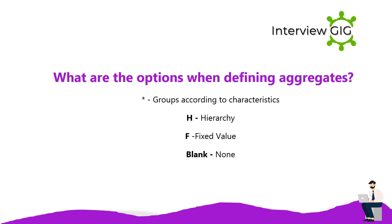What are the options when defining aggregates? The options are: H — hierarchy, F — fixed value, blank — non-aggregated/all characteristics.